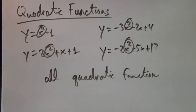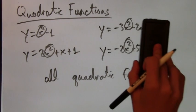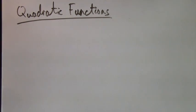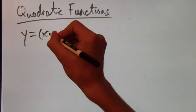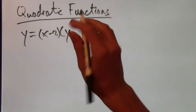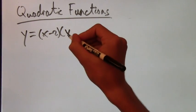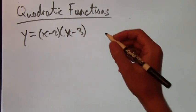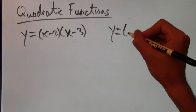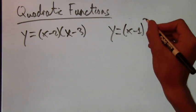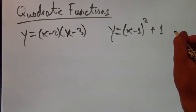So what else could a quadratic equation, a quadratic function, look like? Well, for example, there's also y equals x minus 2 times x times x minus 3. Also another example, y equals x minus 1 squared plus 1.